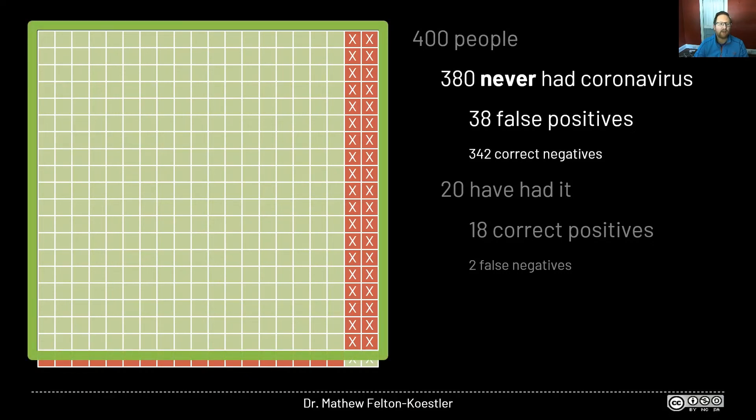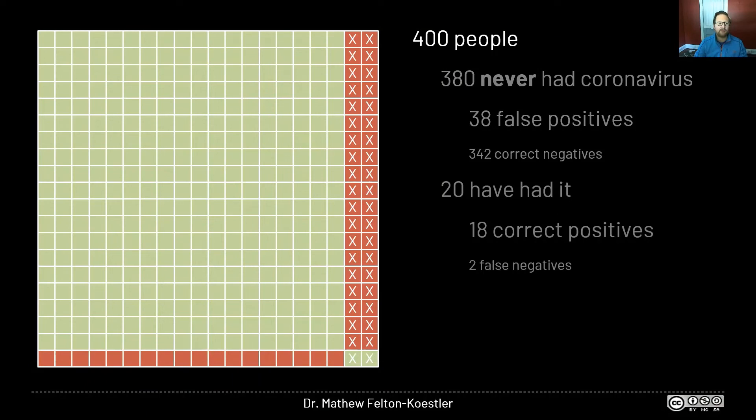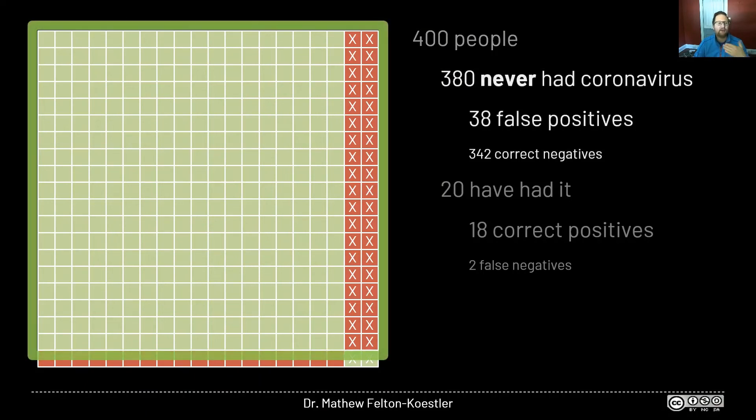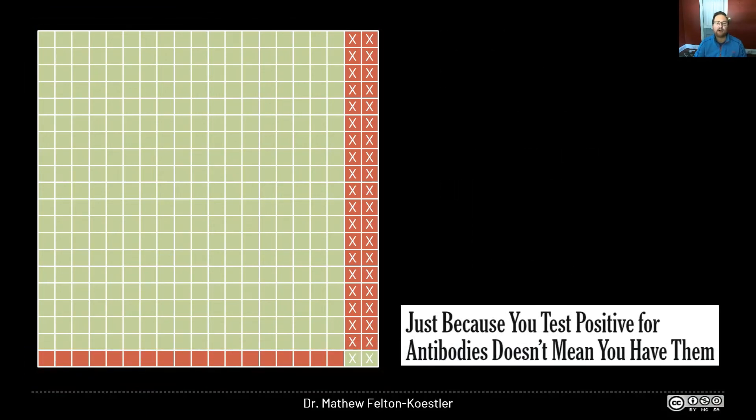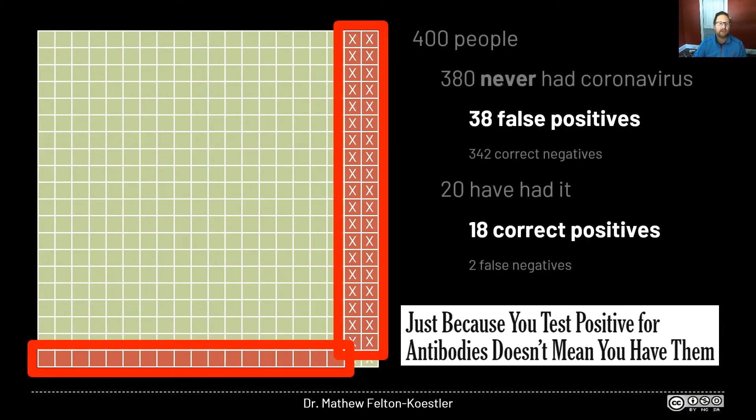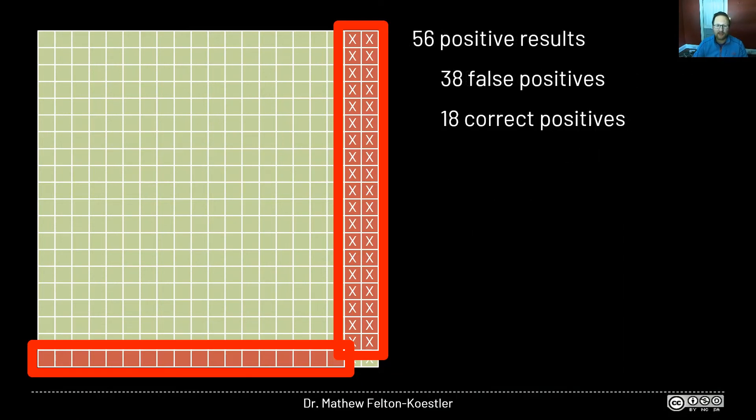All right, so as a reminder, we have 400 people total. We've got 380 who have never had the coronavirus, and we've got 20 who've had it. As a reminder, the article's title is, Just because you test positive for antibodies doesn't mean you have them. They're worried people are going to think they're safe or immune when they're really not. So that's why we're really only interested in the positive tests. These are people who took the test and it says, hey, yeah, you have antibodies. And they're thinking to themselves, all right, I'm in good shape.